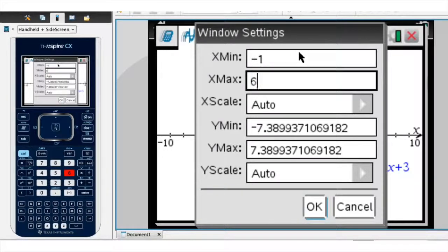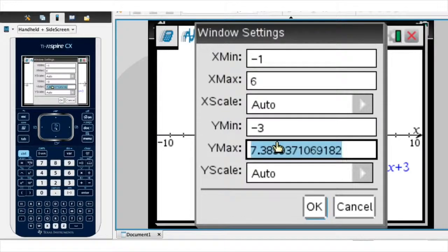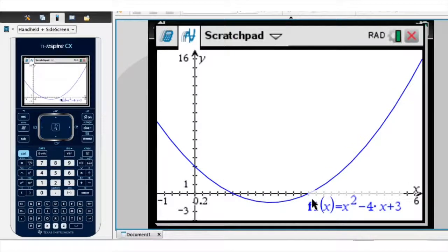To get rid of the space at the bottom of the graph, I'll go ahead and reduce this minimum y value. And I'll make that negative 3. And I'll increase the maximum y value to 16. And I click OK. There we go. Now I can see the curve very clearly. And I'll just move the label here to the side, like so.